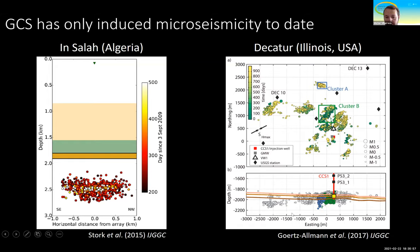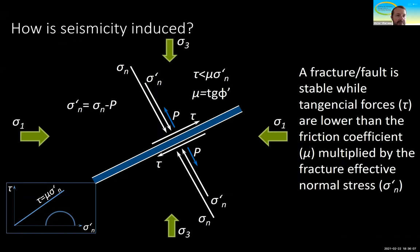We will see during the presentation why there is this tendency for seismicity to occur below the storage formation. But first, let's take a quick look at how seismicity is induced. Let's imagine we have a fracture of whatever orientation. We have a stress field that tends to close the fracture as the normal stress, and there will be fluids in the subsurface filling the fracture — principally water — which has a pressure.